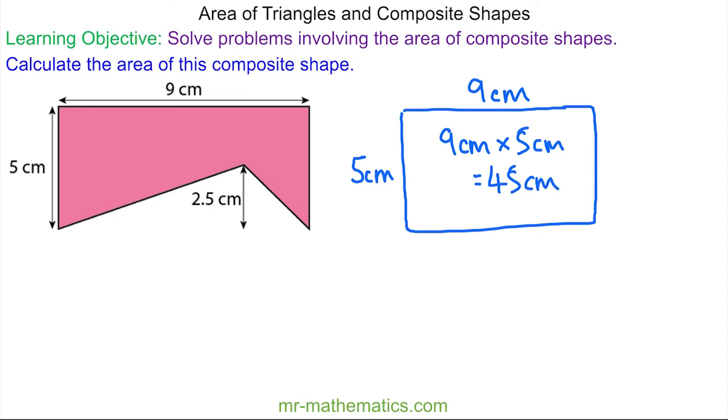From this rectangle, I'm going to subtract the area of the triangle at the base where we know the base is 9 centimeters and the perpendicular height is given as 2.5.